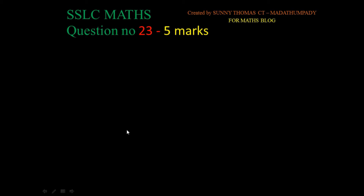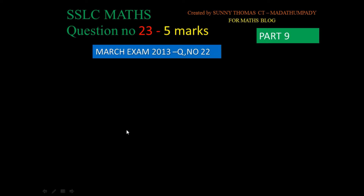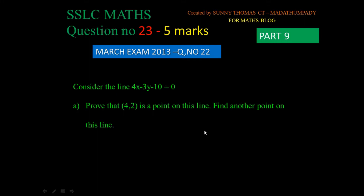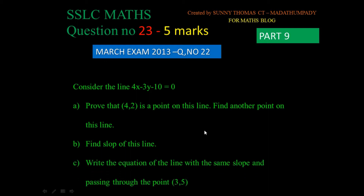Hello everyone. Part 9. After the SLC exam, March 23rd, question number 22. Consider the line 4x minus 3y minus 10 equals 0. Prove that 4,2 is a point on this line. Find another point on this line. Find the slope of this line. Write the equation of the line with the same slope and passing through the point 3,5.